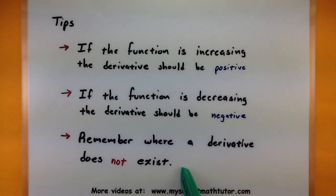Also remember that there's a few places where the derivative does not exist. So places where the function is not continuous, at cusps or corners, and vertical tangents you will not have a derivative there. All right let's go ahead and look at these graphs and do some derivatives.